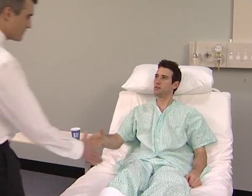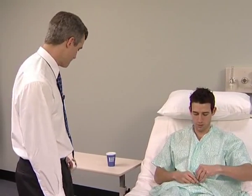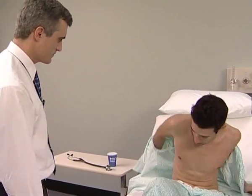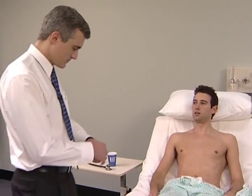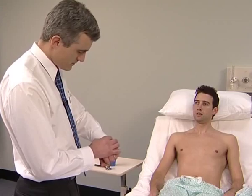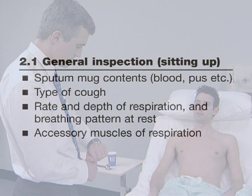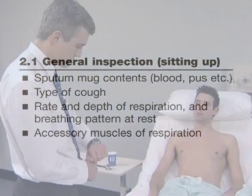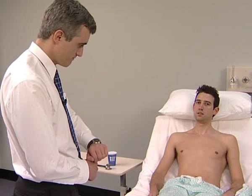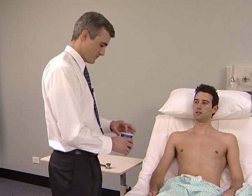For the respiratory system examination, the patient should sit up in bed undressed to the waist. The general inspection should begin as the patient enters the room or begins undressing. The examiner stands back to look for signs of dyspnea, the rate and depth of respiration, and the use of the accessory muscles of respiration.